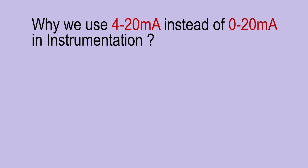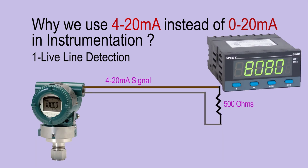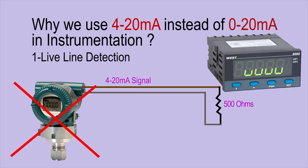Reason number one is live wire detection. Suppose we have a pressure transmitter connected to a pressure controller, and this pressure transmitter is giving a 4 to 20 milliamp output signal. Since the minimum signal is 4 milliamps, if the signal drops below 4 milliamps it indicates there is some issue with the transmitter or the wiring. For example, if the wire is broken or loose, or the transmitter itself malfunctions, the controller shows an error. So the 4 to 20 milliamp standard is very useful for detection of faulty wiring or transmitter malfunction.